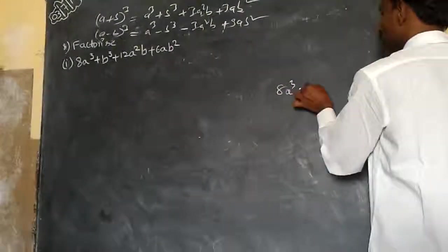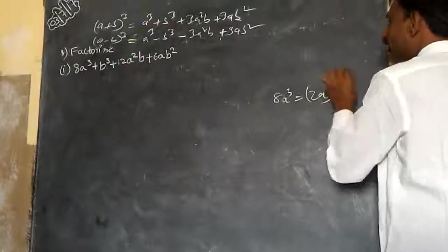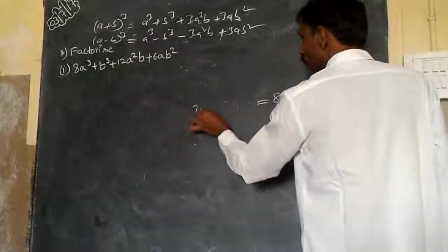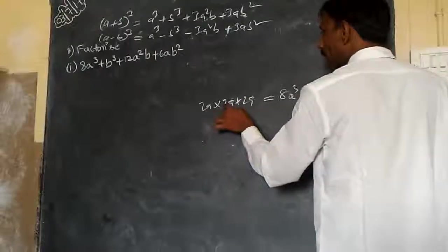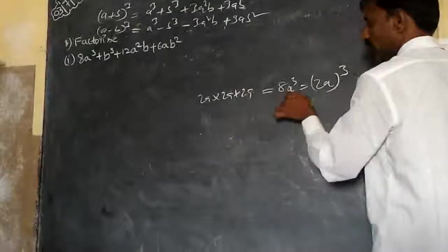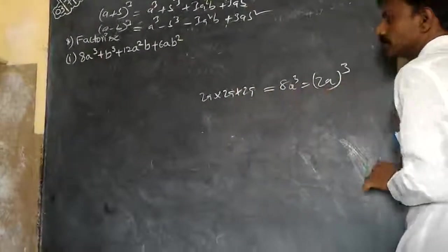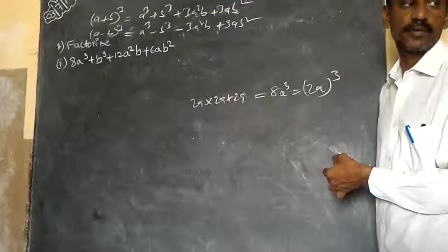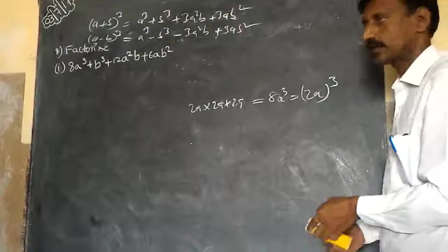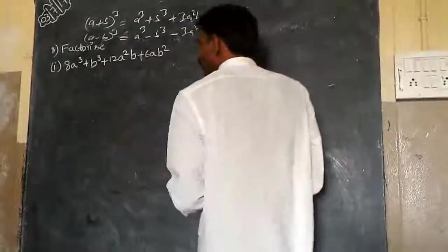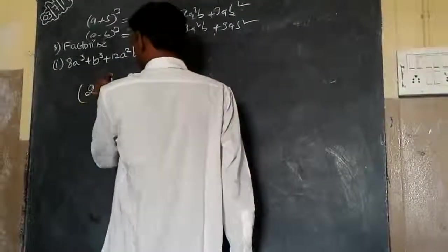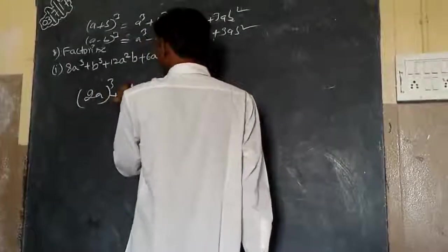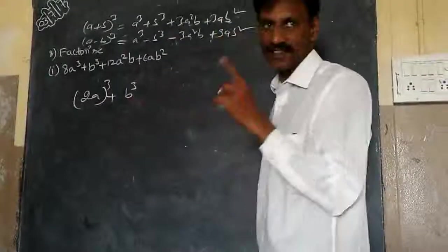8a³ is equal to (2a)³. Can I write it down or not here? So 2a into 2a into 2a. 2 times 2 is 4, 4 times 2 is 8. a into a into a is a³. That is nothing but (2a)³. Now I will write it down (2a)³. The second one is b³. I will write it as this because it is a single term.